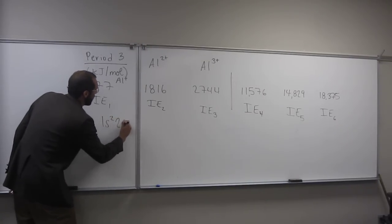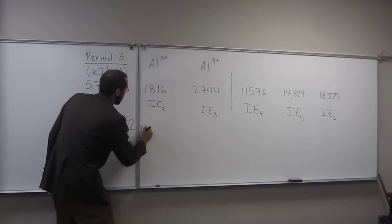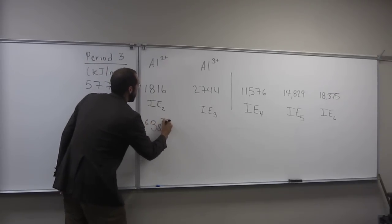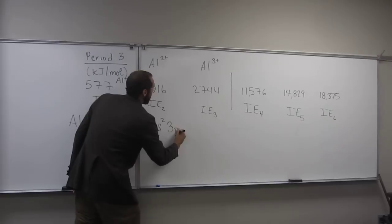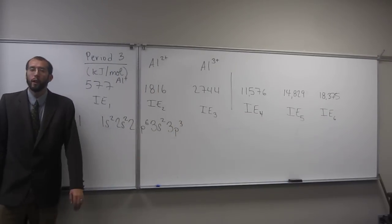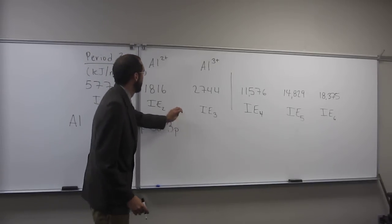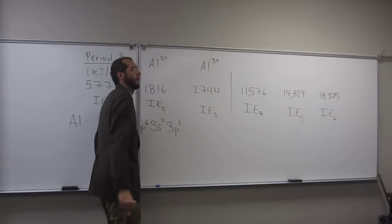So 1s2, 2s2, you guys can help me if you want, 2p6, 3s2, 3p1. So that's the electron configuration of the atom. It's 3p1. Oh, 3p1, sorry. 3p1, thank you.